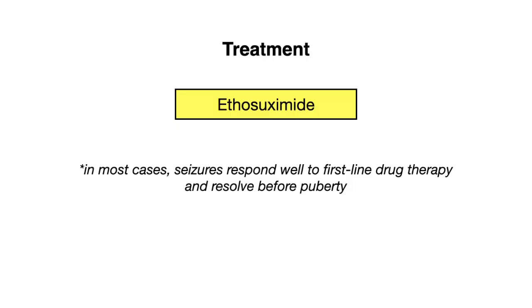So how do we treat Absence seizures? The first-line treatment and the one that you need to know is ethosuximide. In the majority of cases, patients respond very well to this treatment, and most seizures resolve before puberty.